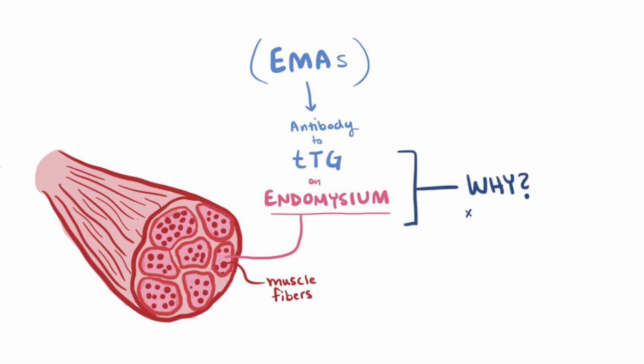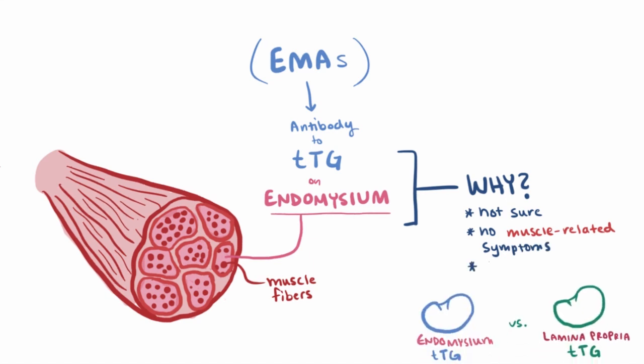It's not totally understood why these are produced, since they don't seem to cause any muscle related damage or symptoms. It's possible they're produced just because of their structural similarity to the transglutaminase in the lamina propria. One thing they are helpful for, though, is making a diagnosis.